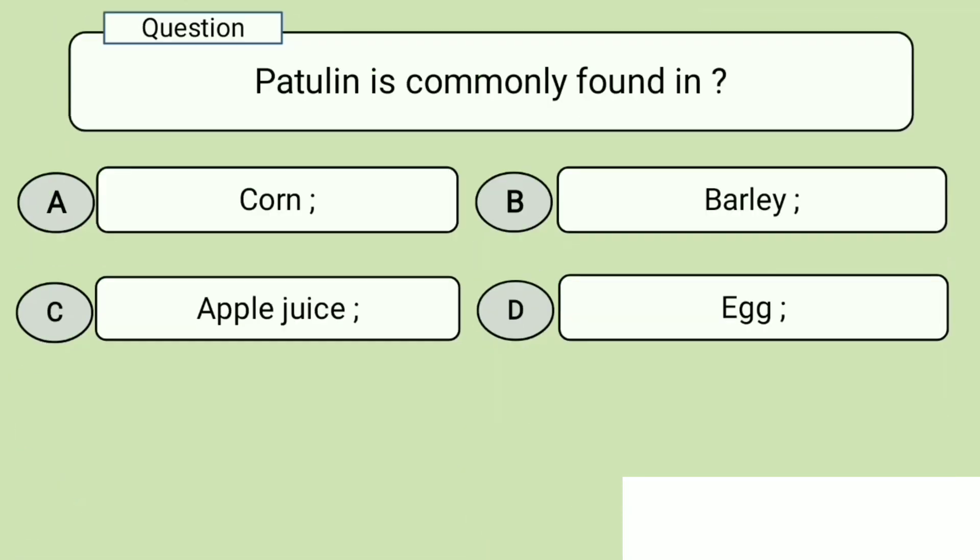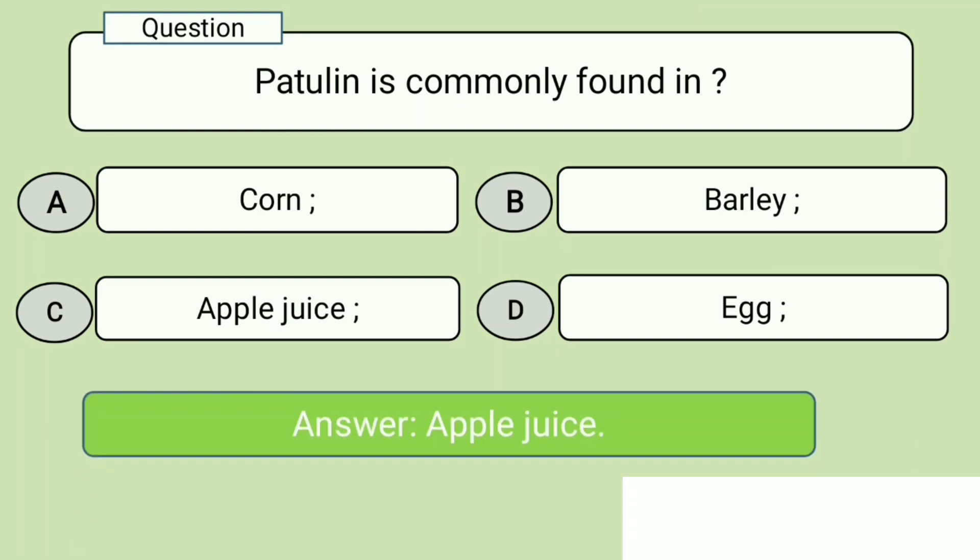Question 1. Patulin is commonly found in. A. Corn, B. Barley, C. Apple Juice, D. Egg. Answer: Apple Juice.